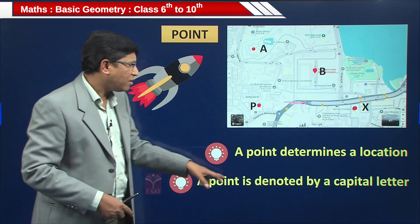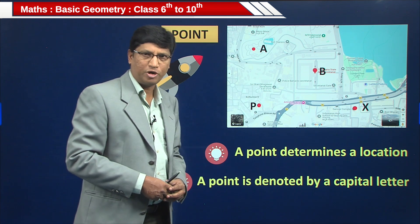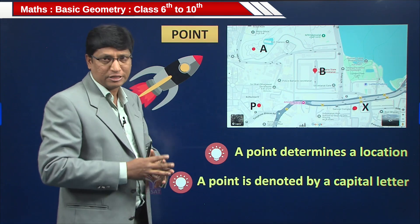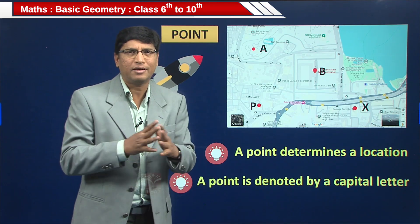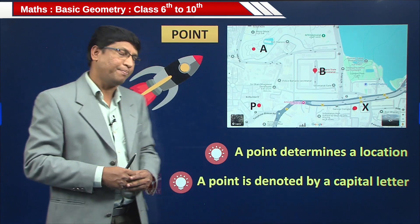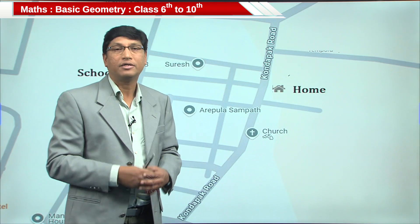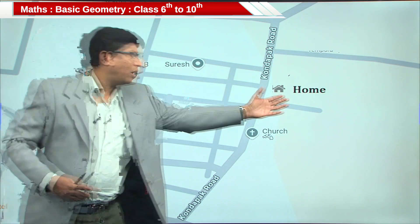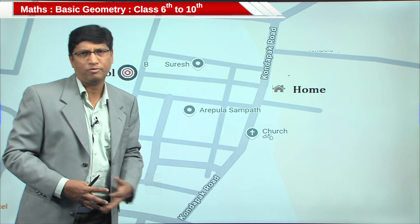A point determines a location — maybe a market, maybe a temple, or something like that. Point B represents the secretariat; points B and X also represent some location. A point is always denoted by a capital letter. A point is dimensionless — it doesn't have length or breadth. This you need to remember, children.